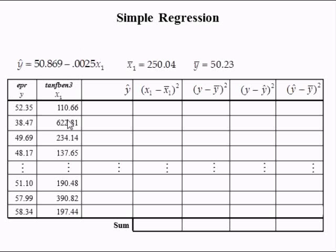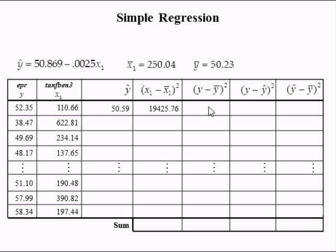We now use the predicted equation: 50.869 minus 0.0025X. We compute the predicted values by substituting in 110.66 into X1: 110.66 times negative 0.0025 added to 50.869 gives us 50.59. The total variation in the first observation of X is (110.66 minus 250.04) squared, which equals 19,425.76. The total variation in Y is (52.35 minus 50.23) squared, which equals 4.47.